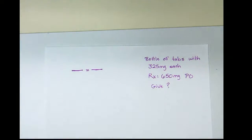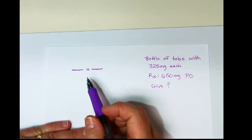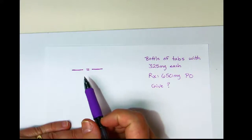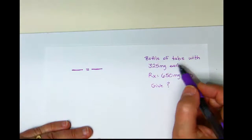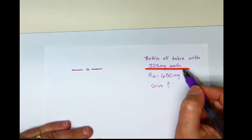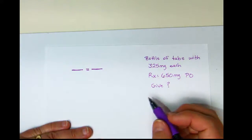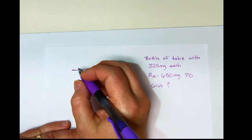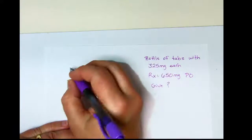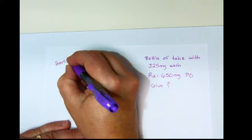Though most everybody could look at this problem and be able to solve it without going into much detail, we're going to show this as an example of how to trade out our price per gallon for solving a dosage problem. So our order says we have a bottle of tablets that are 325 milligrams each. We have an order for 650 milligrams by mouth, and the question is how much are we going to give? To put this in a ratio and proportion problem, what I have is always on the left hand side.